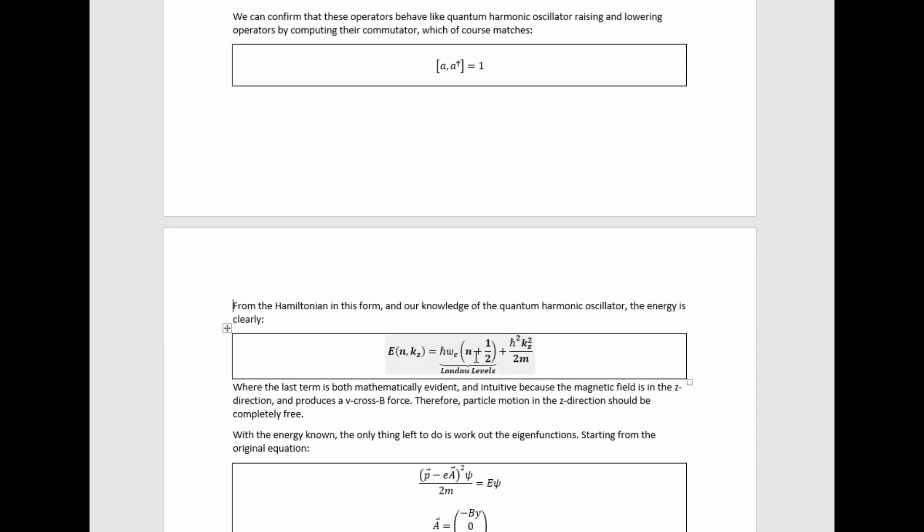We have this contribution that we recognize from the harmonic oscillator part of the problem, and then this one, which just corresponds to a free particle, where the last term is both mathematically evident, given the form of the part of the Hamiltonian that gave rise to it, and intuitive, because the magnetic field is in the z direction, and provides a v cross b force, therefore the particle motion in the z direction should be completely free.